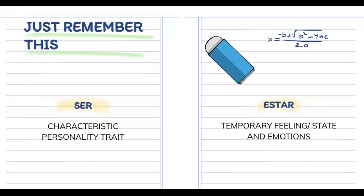In conclusion, you just need to remember this: ser es una característica y un personality trait, pero estar es temporary feeling, state, and emotion. Thank you so much for watching. Don't forget that this is the only main thing that you need to remember.